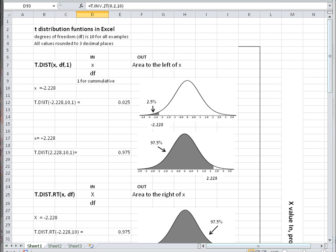Degrees of freedom is just sample size minus 1, so the sample size would be 11. The input with minus 2.228 returns the area to the left of minus 2.228, and the input requires a 1 for cumulative.